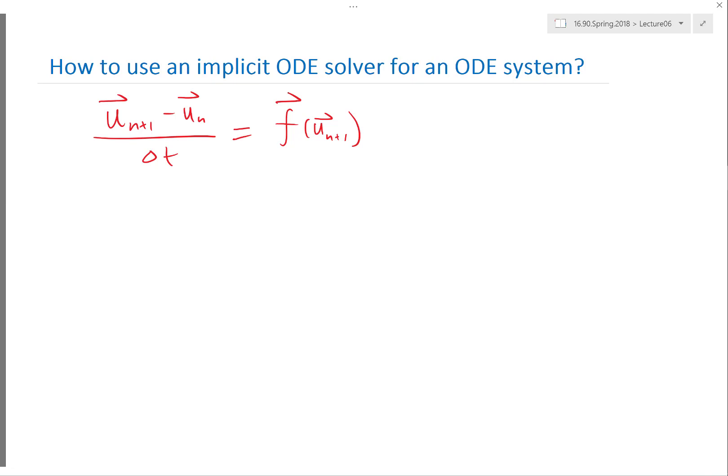Is there a variation of Newton's method for a system of equations? Yes, you can do the Taylor series, but instead of the derivative, you use the matrix of partial derivatives. Yes.